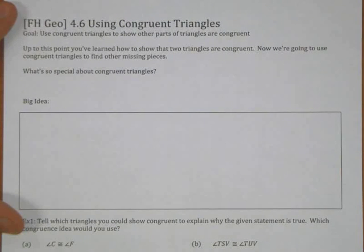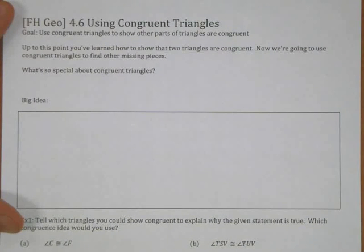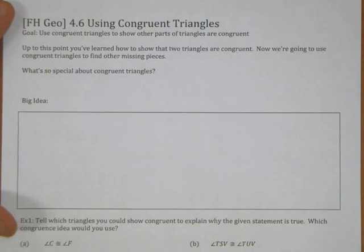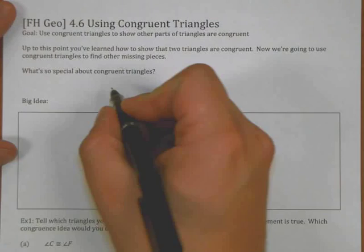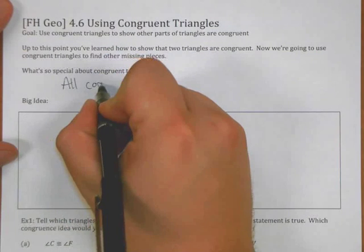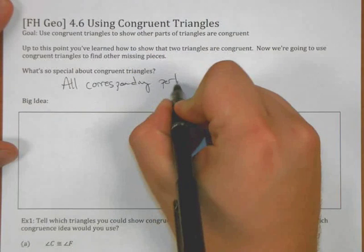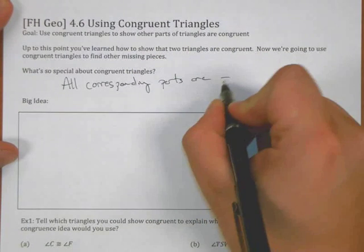Here are the notes for Section 4.6 Using Congruent Triangles. Up to this point, we've learned how to show two triangles are congruent, and now we're going to use congruent triangles to find some other missing pieces. So we've talked a lot in class about showing triangles are congruent in order to find other things about them. What's so special about congruent triangles is that all corresponding parts are congruent.